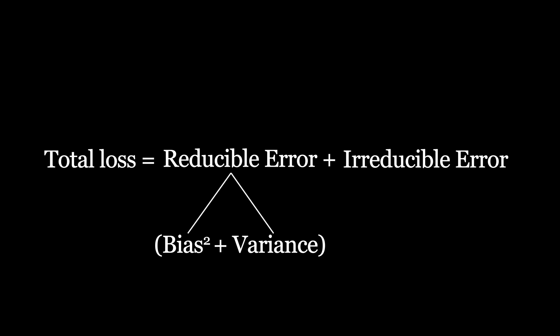The error which you minimize by training is called reducible error. Loss function consists of these two errors, whereas reducible error can further break down into bias and variance. Let's understand these two terms and how they affect model performance.